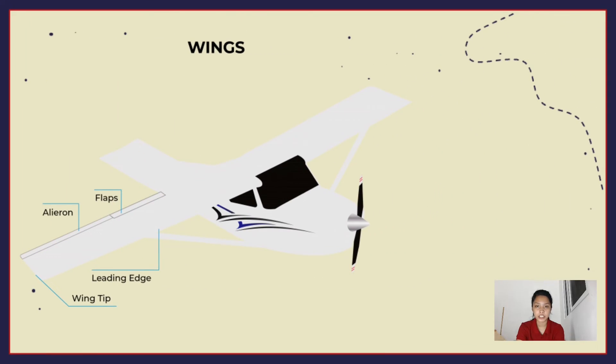Wings may be attached at the top, middle, or lower portion of the fuselage. These designs are referred to as high, mid, and low wing. The number of wings can also vary. Airplanes with a single set of wings are referred to as monoplanes, while those with two sets are called biplanes.